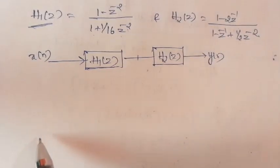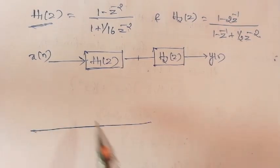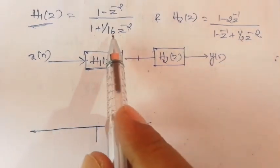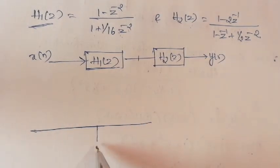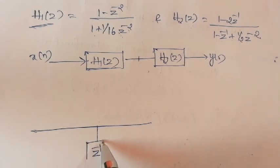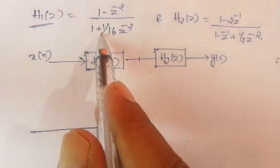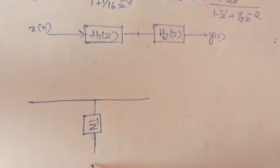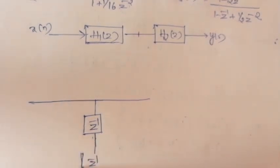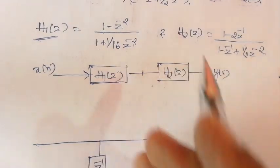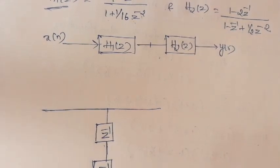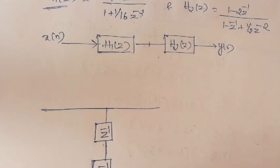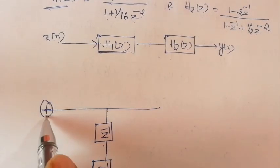First I will take H1 of z. It contains both a zero system and a pole system. First we realize the pole system. For z to the power minus 2, do not write it directly — the basic delay element is z to the power minus 1. So use two cascaded unit delays. For the first time delay there is no coefficient term; for the second time delay, the coefficient is 1/16. In Direct Form 2, take the opposite sign, that is minus 1/16, added with the previous result.